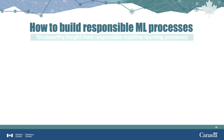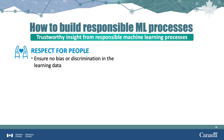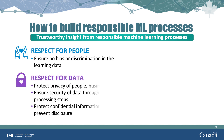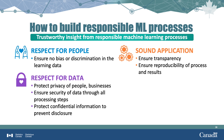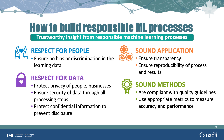A machine learning process ensures respect for people by ensuring there's no bias or discrimination in the learning data, and that everyone is treated fairly. A machine learning process that ensures respect for data protects privacy of people and businesses, ensures security of data through all processing steps, and protects confidential information to prevent disclosure. A machine learning process that has sound application ensures transparency and reproducibility of both the process and the results. A machine learning process that has sound methods is one whose methods are compliant with quality guidelines and uses appropriate metrics to measure accuracy and performance.